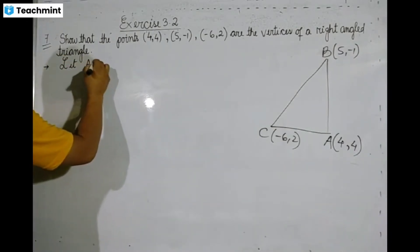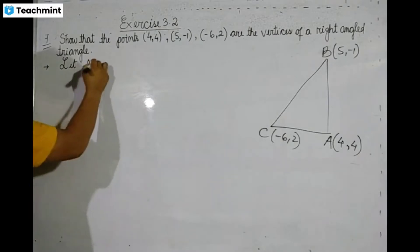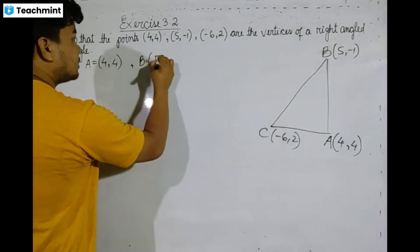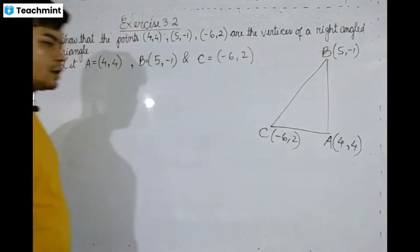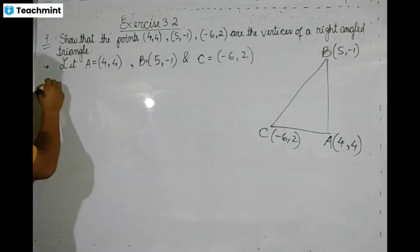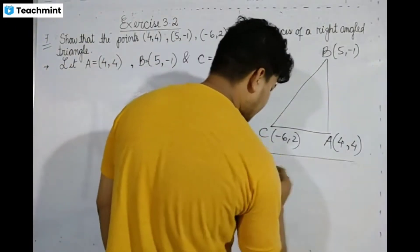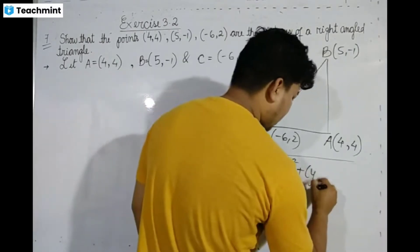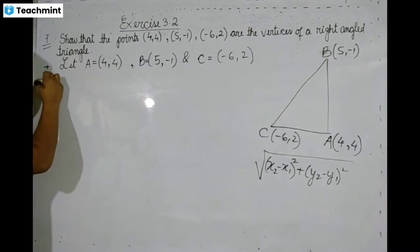So point A has coordinates (4, 4), point B has coordinates (5, minus 1), and point C has coordinates (minus 6, 2). Now I'm going to use the distance formula: distance equals root over (x2 minus x1) whole square plus (y2 minus y1) whole square.